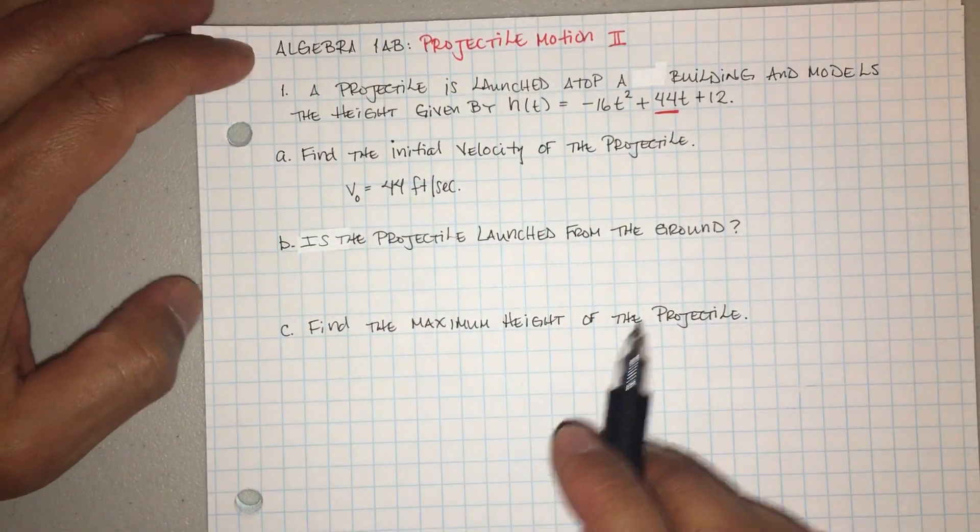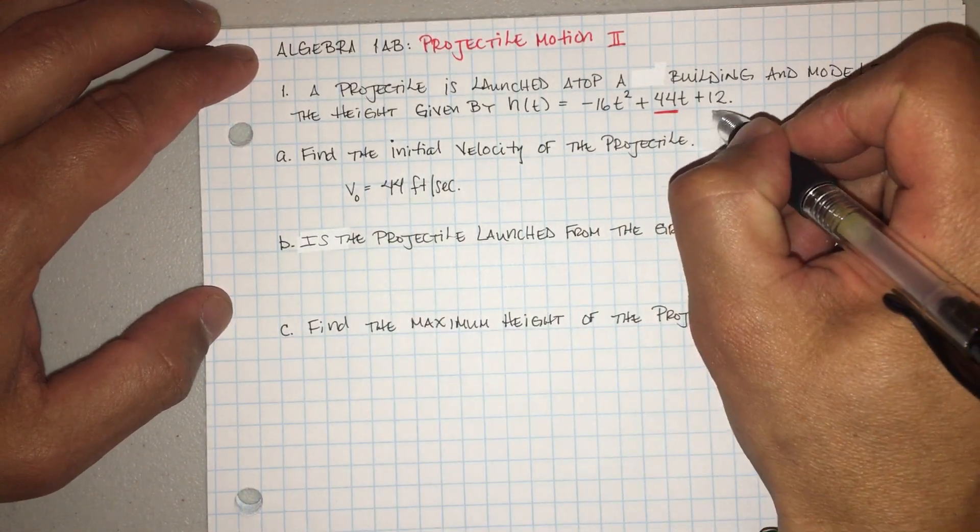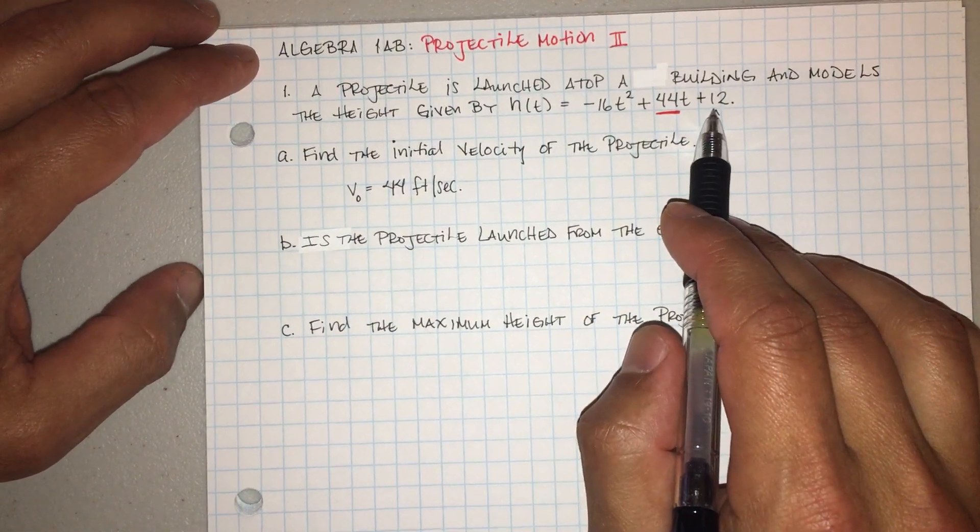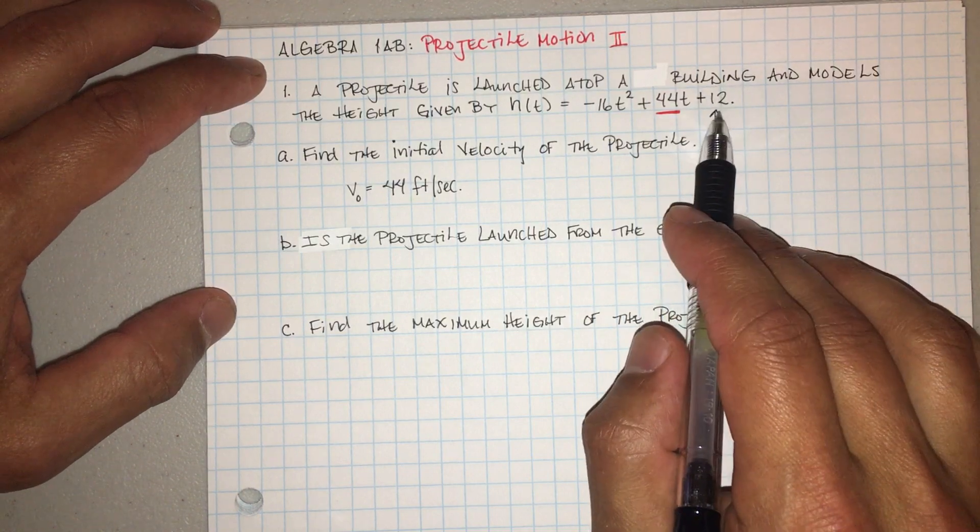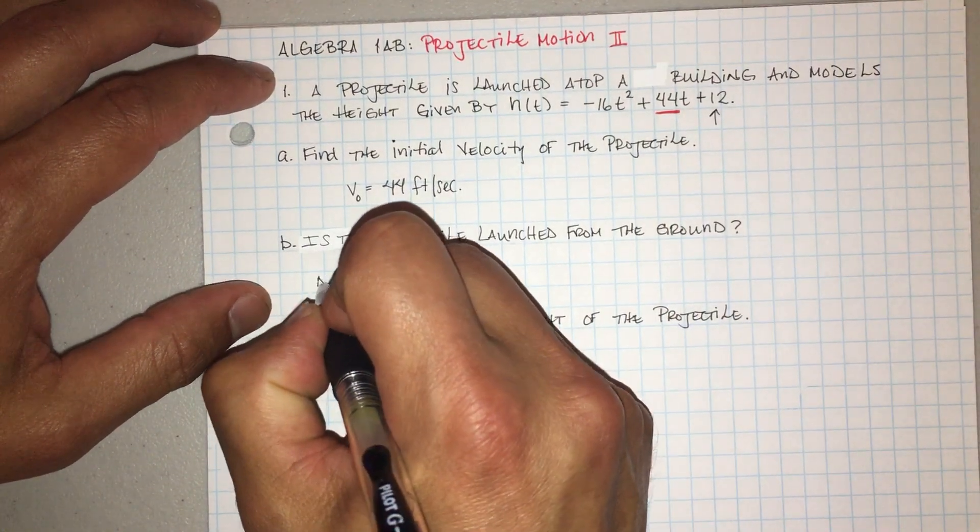But the purpose for asking you that is to be able to analyze. You see this 12? Ven este 12? This gives you the initial height. Esta es la altura inicial. Entonces es 12 pies del piso. So this guy, the initial height is 12 feet from the ground.